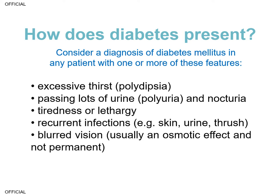Blurred vision is due to what we call the osmotic effect, which is the high glucose affecting the amount of fluid in the body and in particular in the lens. The reassuring thing is that this tends not to be permanent. It's also worth highlighting that many individuals who may have type 2 diabetes may be relatively asymptomatic and not have any of the above symptoms.